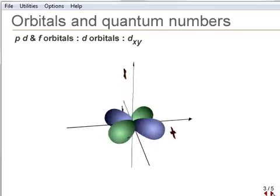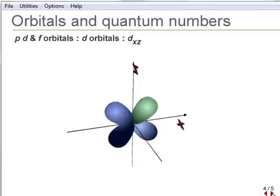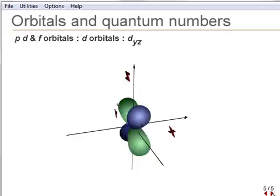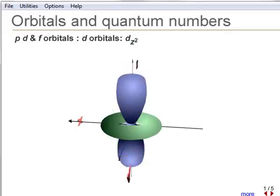The five D-orbitals can also be transferred to a Cartesian coordinate system, giving the shapes shown here. D-orbitals are non-spherical.